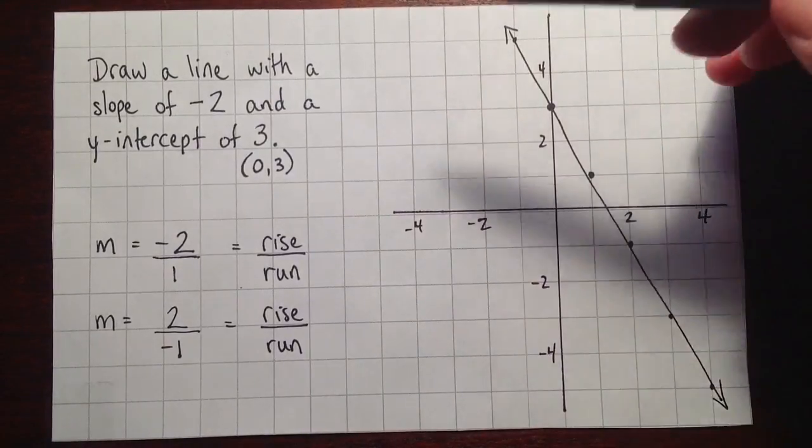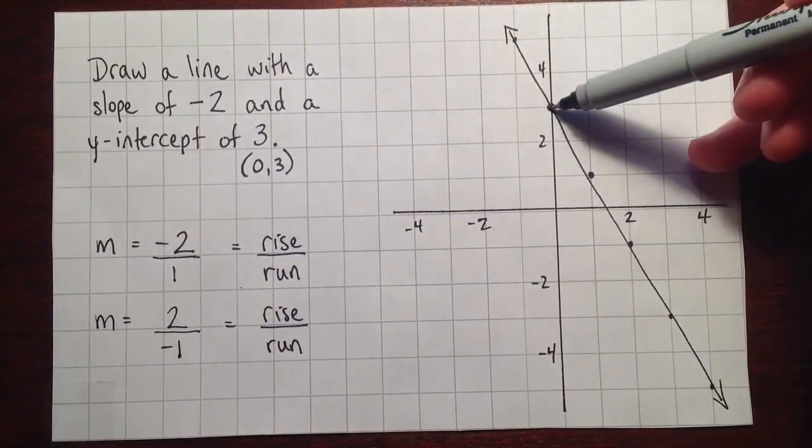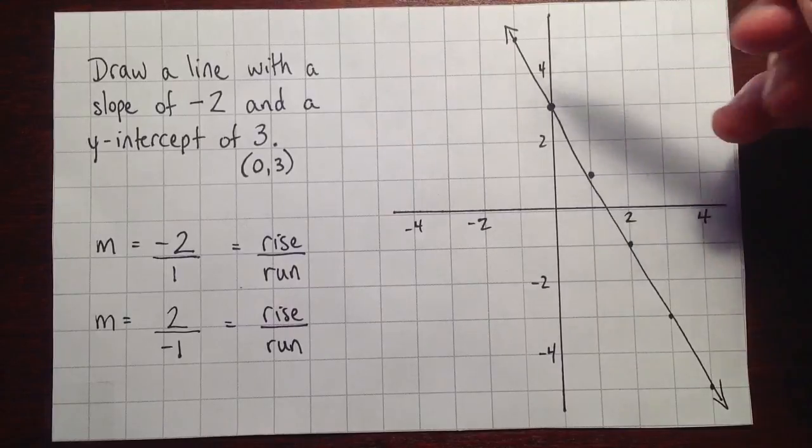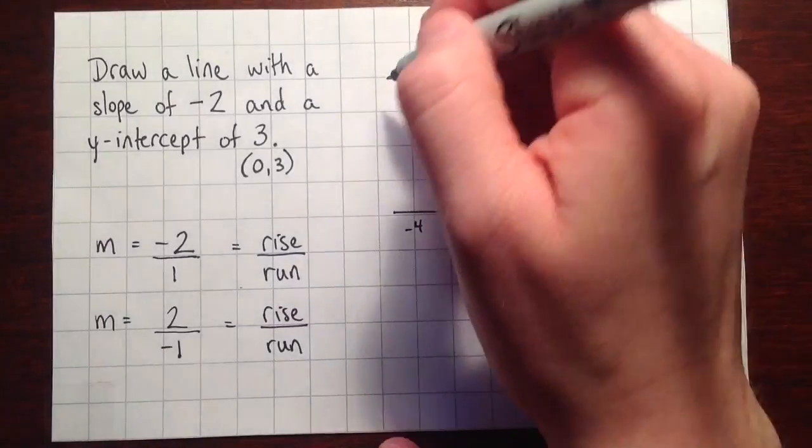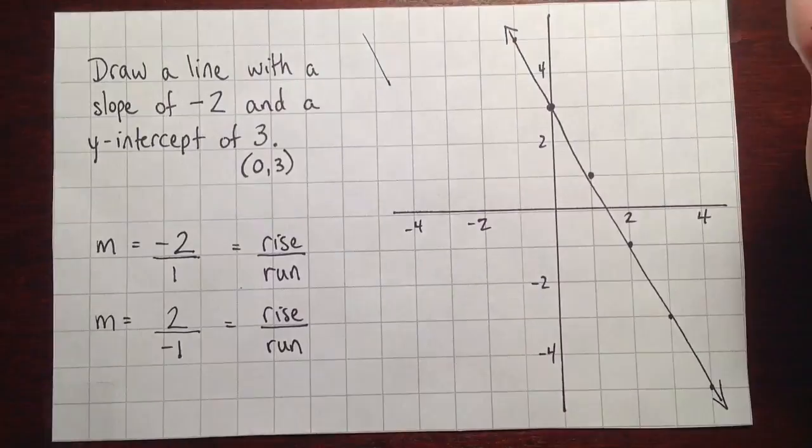Okay, so here's a line with a y-intercept of 3, so that's the point (0, 3), and a slope of negative 2. This makes sense because we know that negative slopes go in that direction.